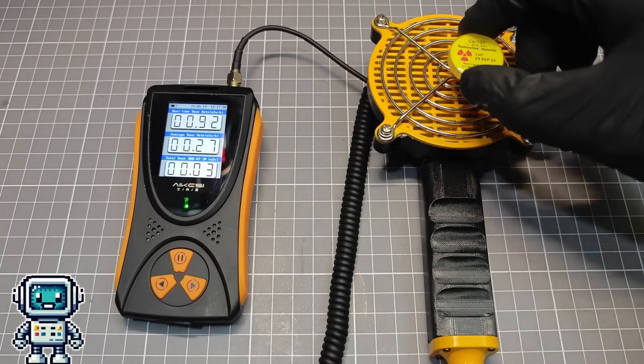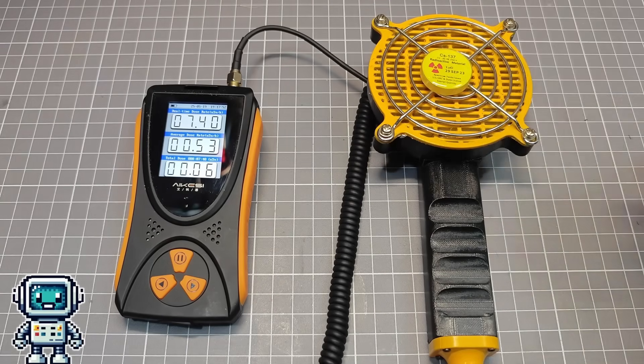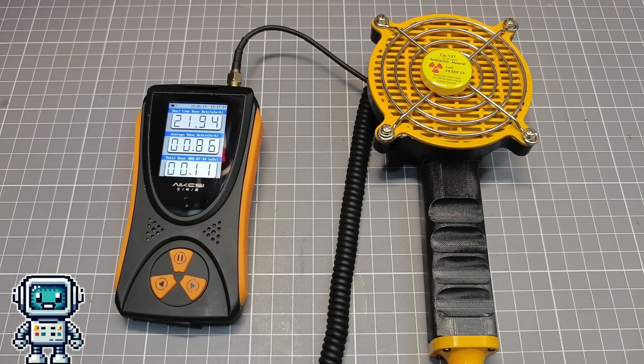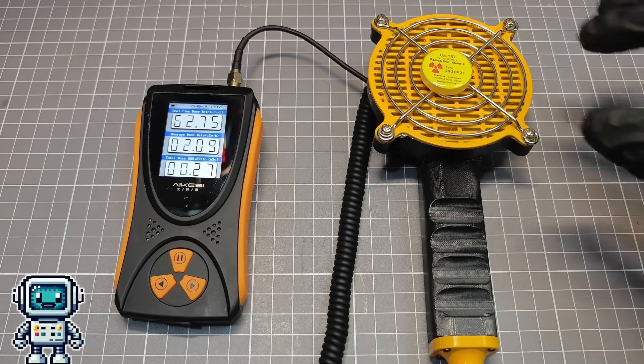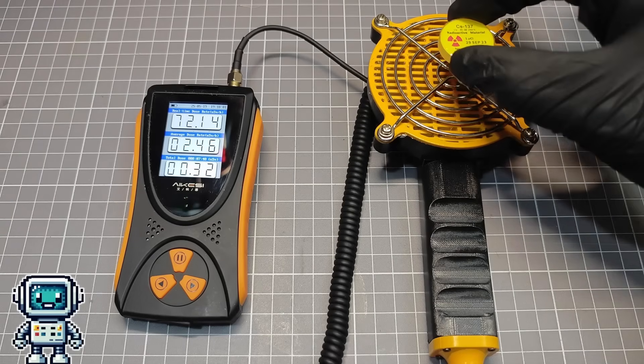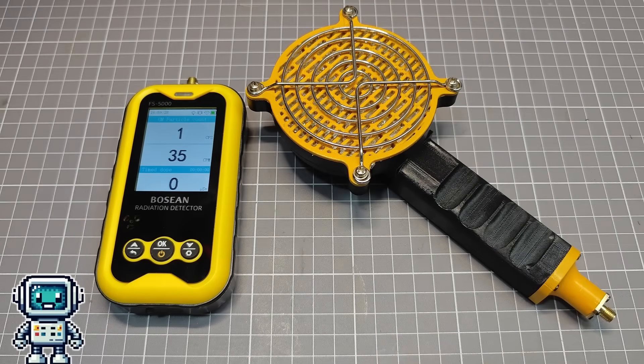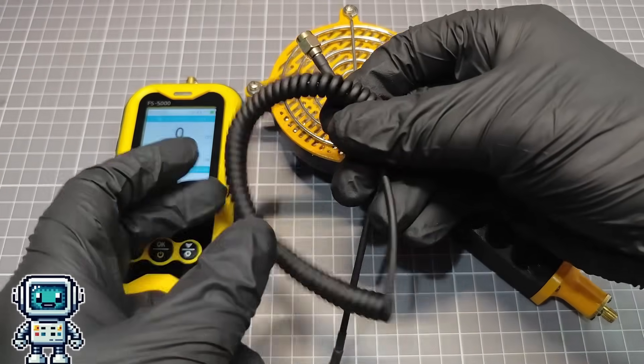And when we attach our new shower head inspired probe, we get a far stronger reaction. It should be pointed out that most of these cheap Geiger counters will limit the clicking sounds once the count rate exceeds some predetermined threshold. But, when we connected our new probe to the FS5000, we found a problem. Well, of course we did.